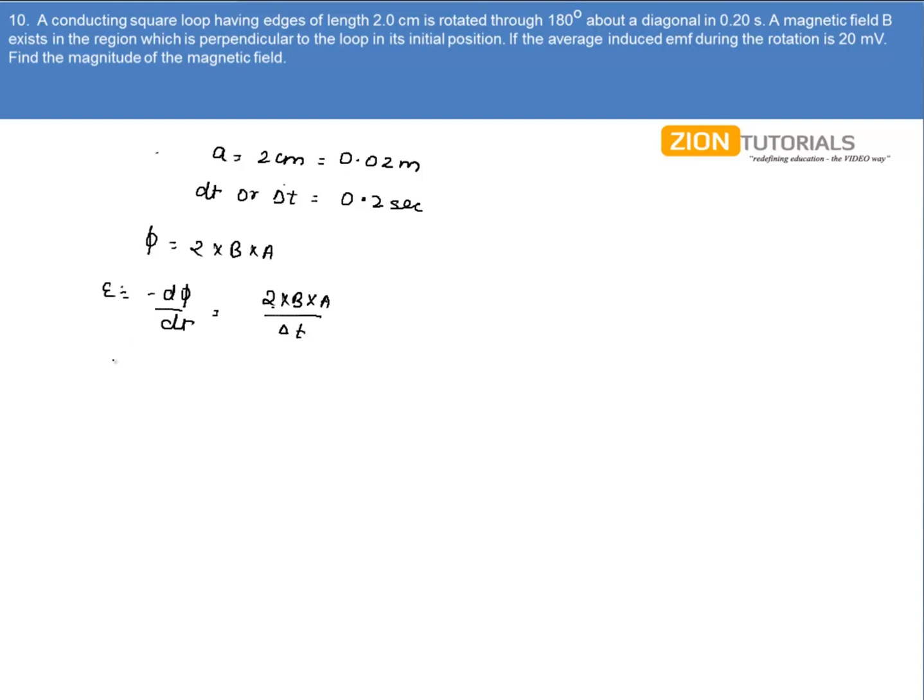On substituting the value we have emf as 20 mV, that is 20 into 10 to the power minus 3 V, that is equal to 2 times of magnetic field that we have to calculate into the area that is 0.02 into 0.02 divided by the time that is 0.2 seconds.